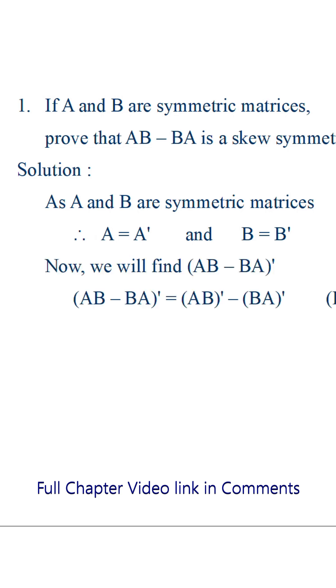AB minus BA whole transpose can be written as AB transpose minus BA transpose. This comes from the property of transpose of matrices.